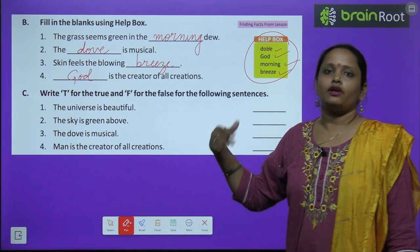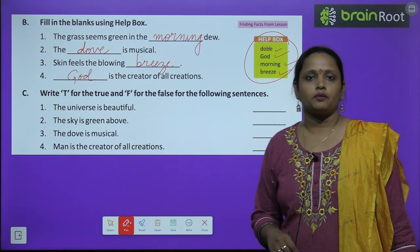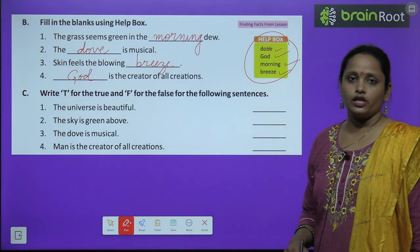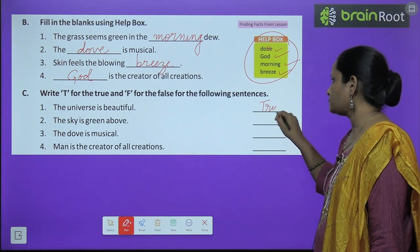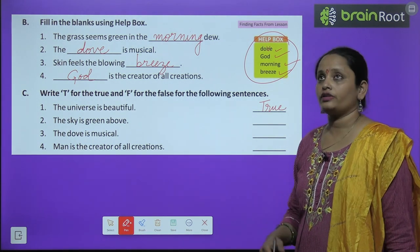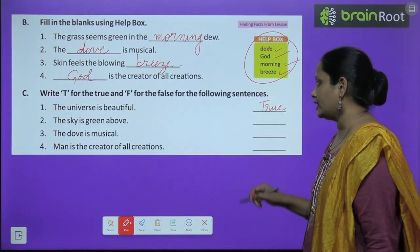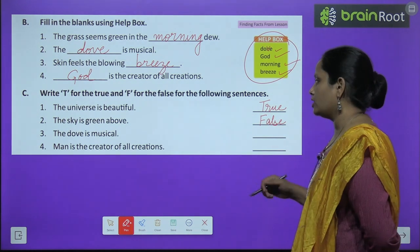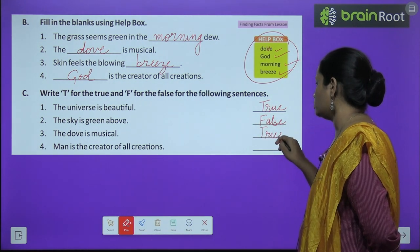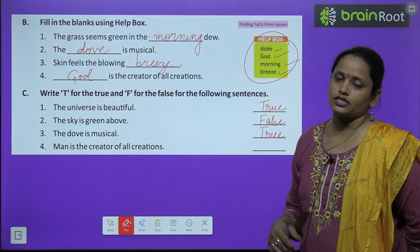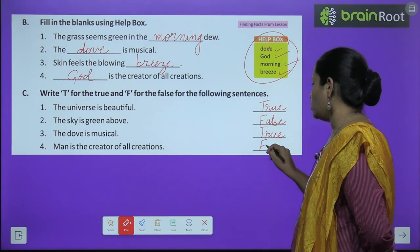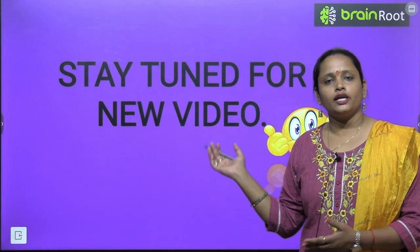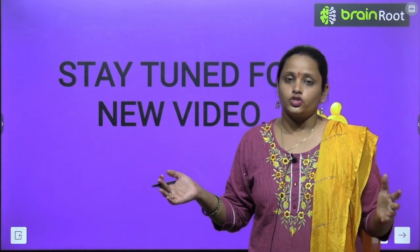Next, write true or false for the following sentences. The universe is beautiful — true. The sky is green above — false, it is blue. The dove is musical — true. Man is the creator of all the creations — false. I hope that is clear, children. With this we have completed the chapter.